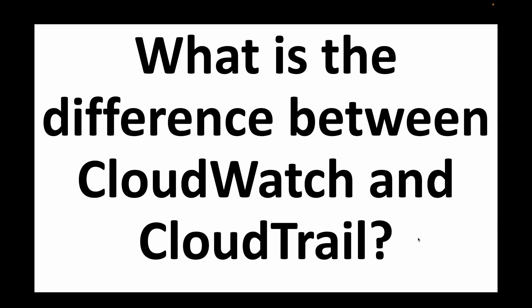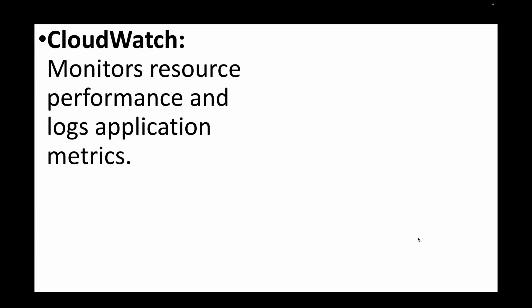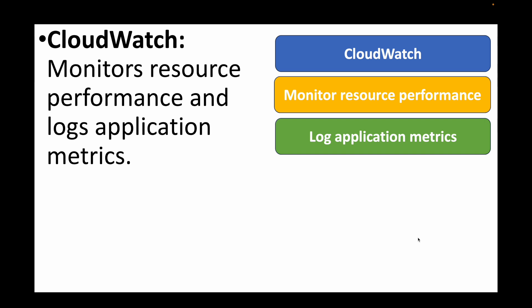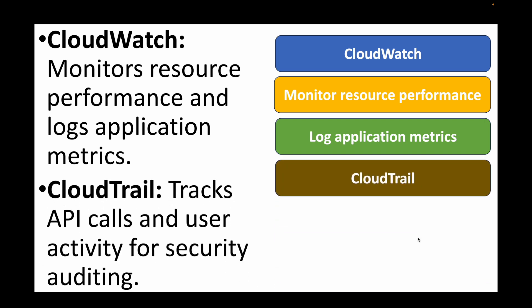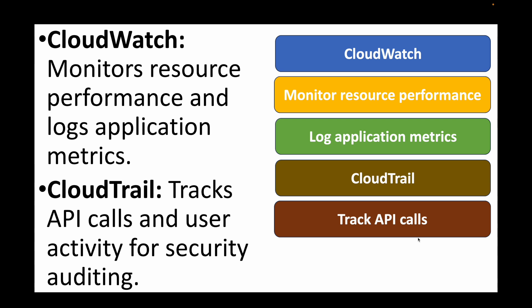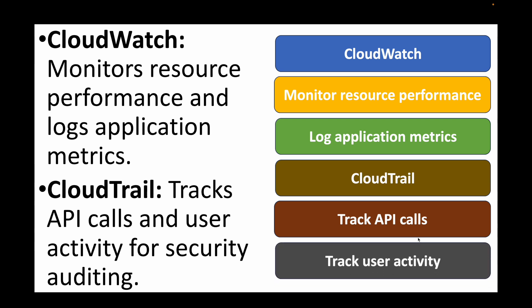The final question is: what is the difference between CloudWatch and CloudTrail? CloudWatch is your monitoring service — you can use it to monitor your resources and performance, and capture application logs and metrics. CloudTrail on the other hand is your auditing service, used to keep track of all API calls happening in AWS and user activity for security auditing. For example, you can find out when an instance was launched, who launched it, or who terminated it. CloudWatch is for performance monitoring; CloudTrail is for activity auditing.